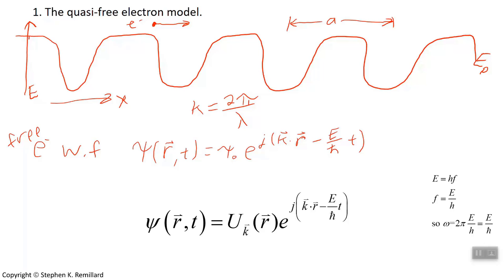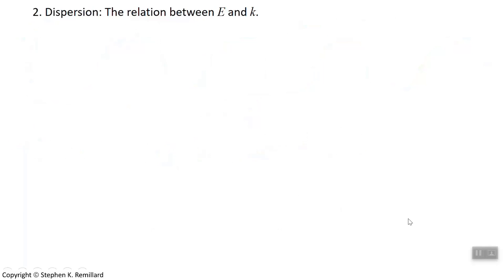And the thing to remember is that we describe an electron with a wave number, 2π over λ. The second concept is dispersion, which is the relationship between energy and wave number. A free electron has a dispersion relation which is quadratic in K. The energy of a free electron is ℏ²K² over 2m. So energy is quadratic in the wave number K for a free electron.